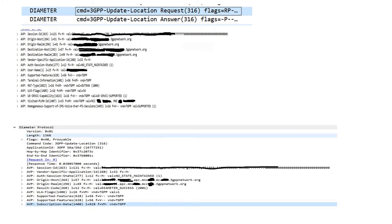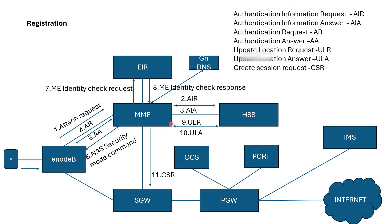Once the Update Location Answer is done, MME needs to find the right S-Gateway and P-Gateway. For that, MME performs a GN DNS query. From the DNS response it gets both the S-Gateway IP address and P-Gateway IP address. The selection criteria for S-Gateway is TAC-based, and for P-Gateway it is APN-based. Once MME gets both IP addresses, it sends a Create Session Request toward S-Gateway over GTPv2 protocol.